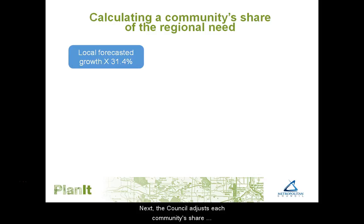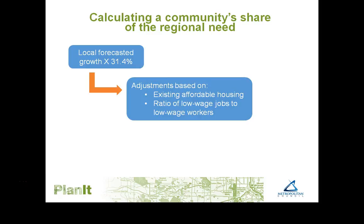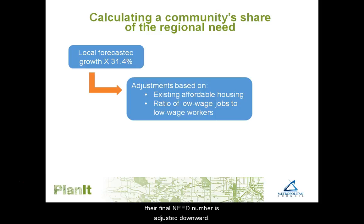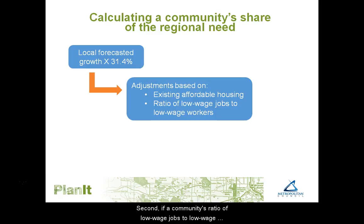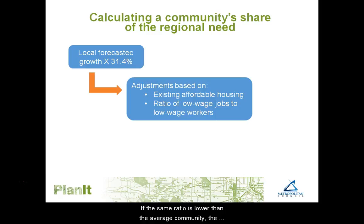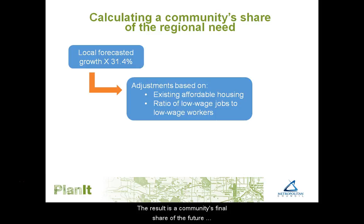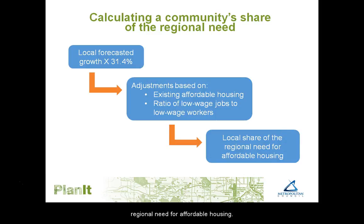Next, the Council adjusts each community's share based on two factors. First, if a community has more than the average community's share of existing affordable housing, their final need number is adjusted downward. Conversely, if a community has less than the average community's share of existing affordable housing, their final need number is adjusted upward. Second, if a community's ratio of low-wage jobs to low-wage earning residents is higher than the average community, their final need number is adjusted upward. If the same ratio is lower than the average community, the final need number is adjusted downward. The result is a community's final share of the future regional need for affordable housing.